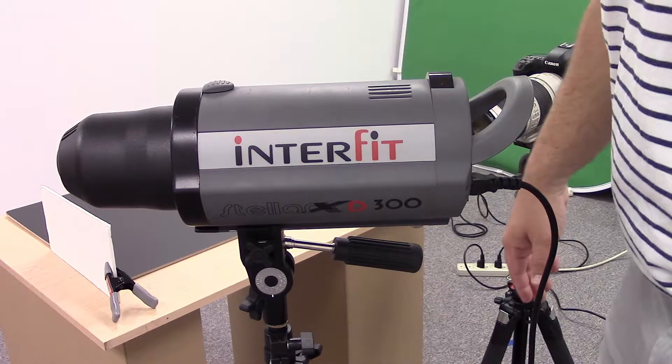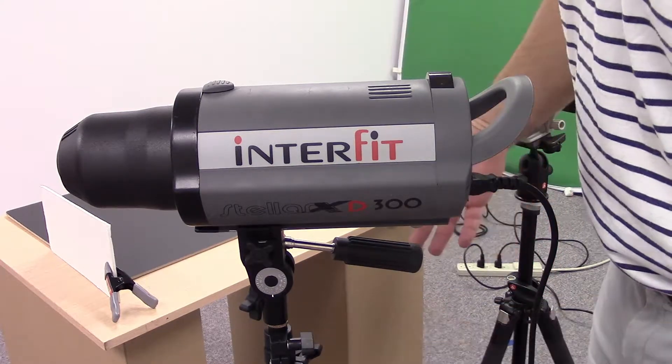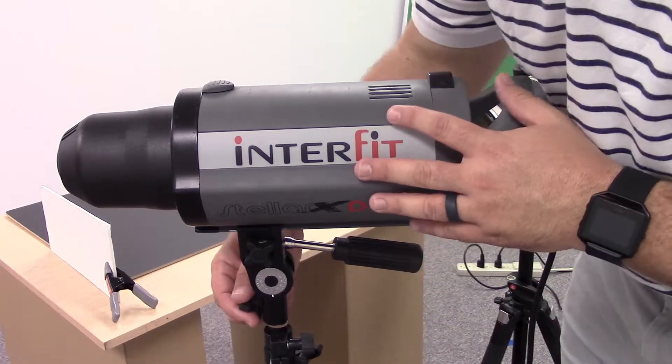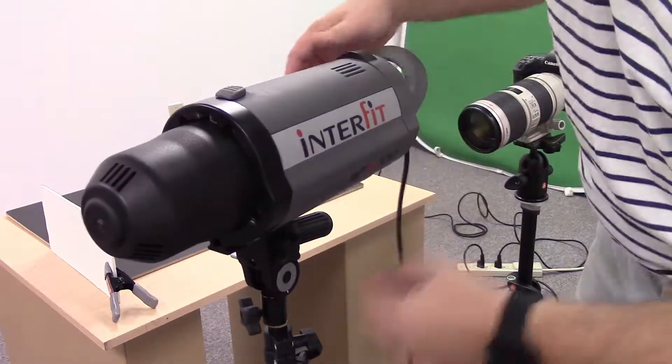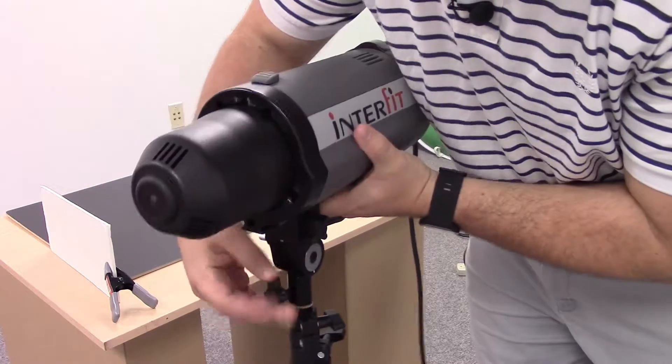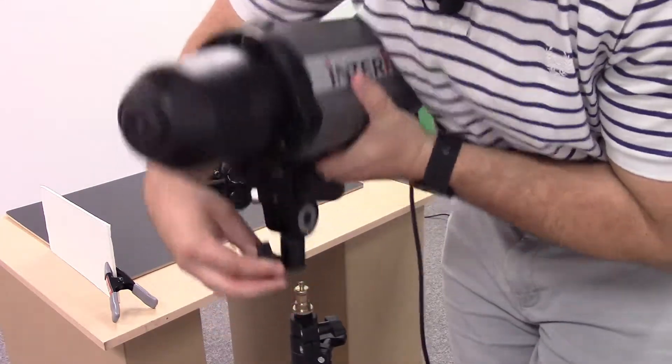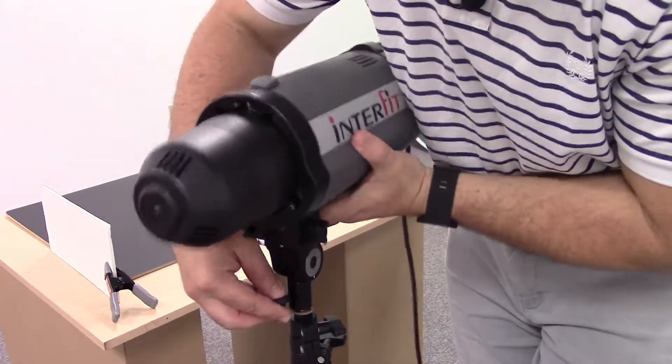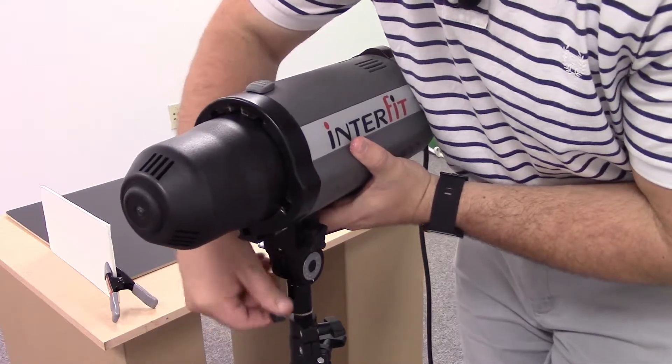The setup is pretty much the same, actually it's identical to our continuous light setup. We have a knob right here. You can use that to loosen and take it off the stand, mount it back on the stand, tighten it back up.